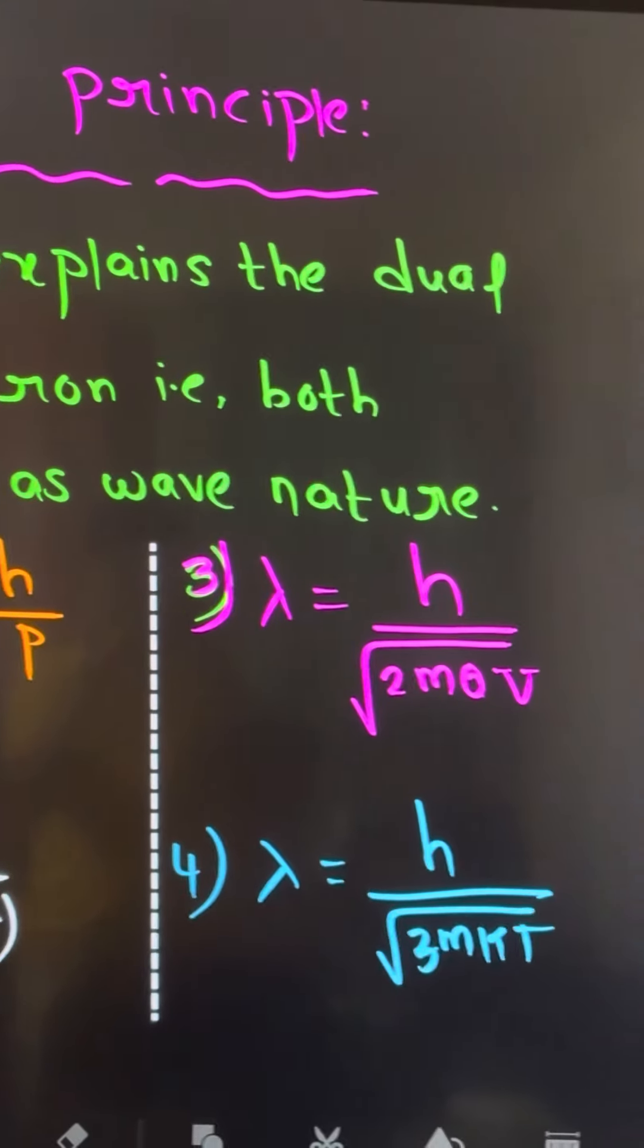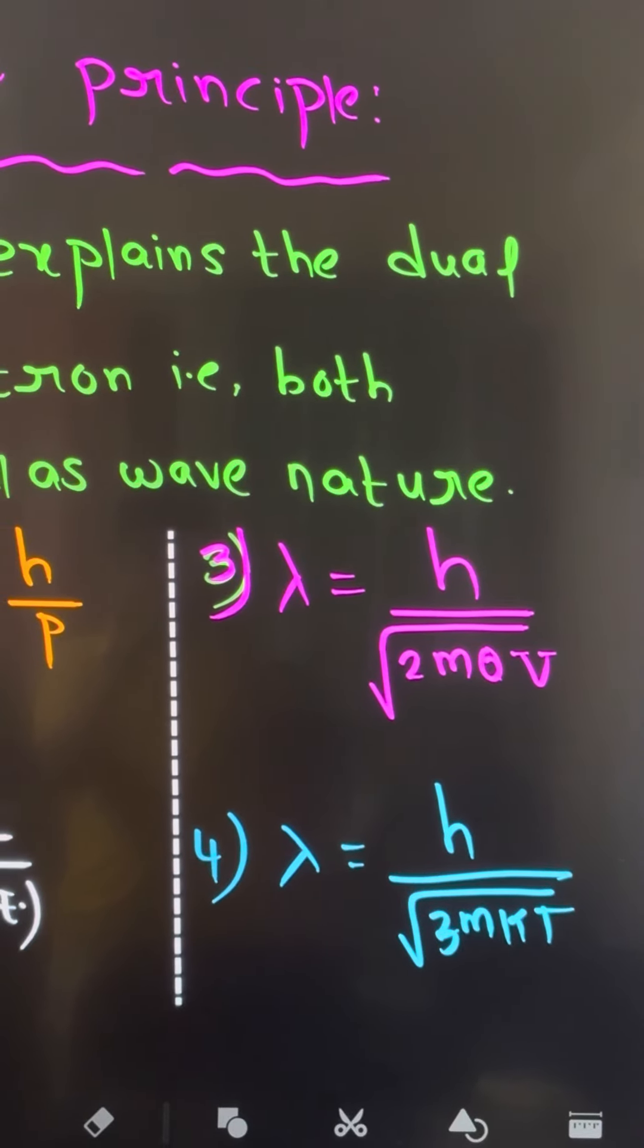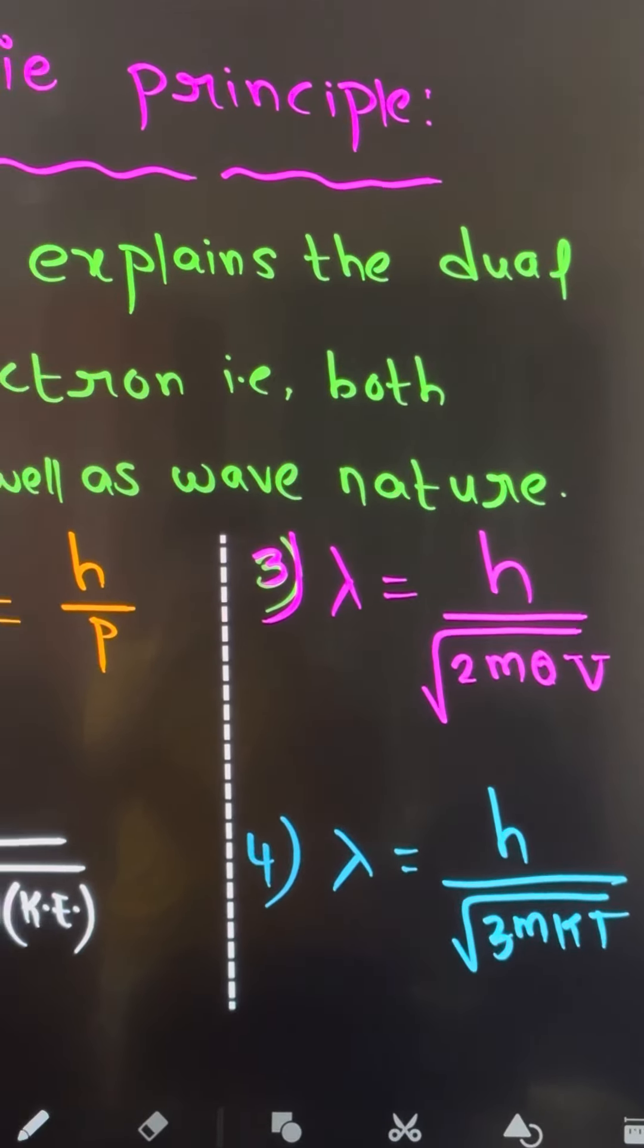Lambda equals h by root over 2mqv, where q is the charge and v is the potential. Lambda equals h by root over 3mkt, where k is the Boltzmann constant and t is the temperature.